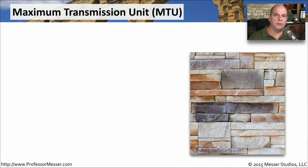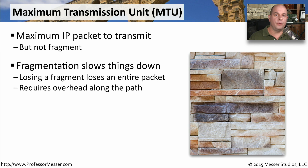An MTU is the maximum transmission unit. This is the largest amount of IP packet information that you could send through the network from one end to the other and avoid doing any fragmentation along the way. This process of fragmentation slows things down. If we do have to fragment, the packet is split up into smaller pieces and sent to the end station. If we lose any of those smaller pieces, the entire packet has to be resent. This also requires additional overhead, because devices have to collect all of the pieces before they can put them together and send them through to the next connection.